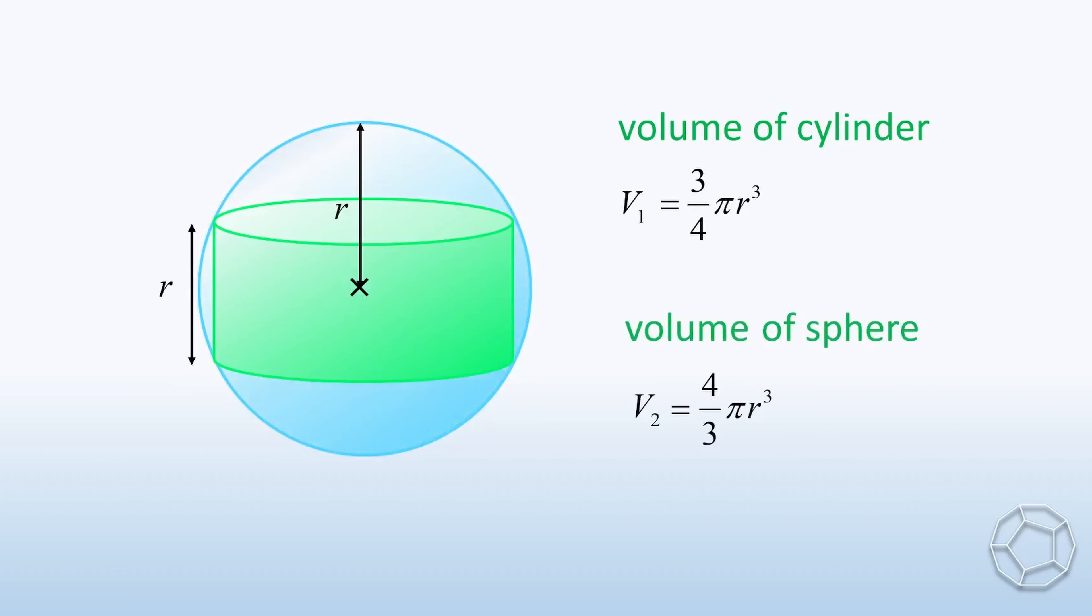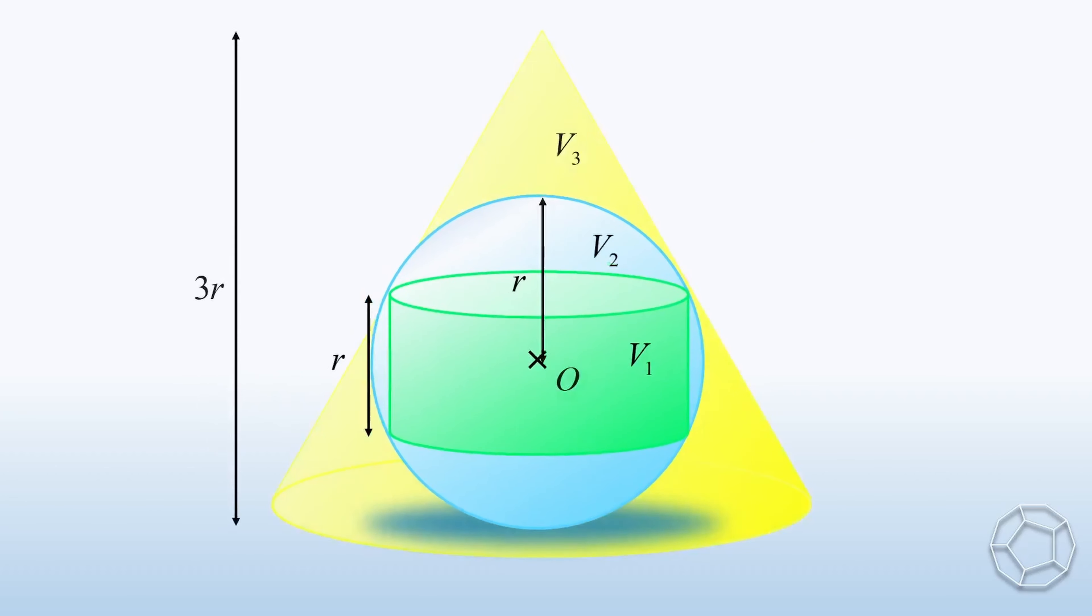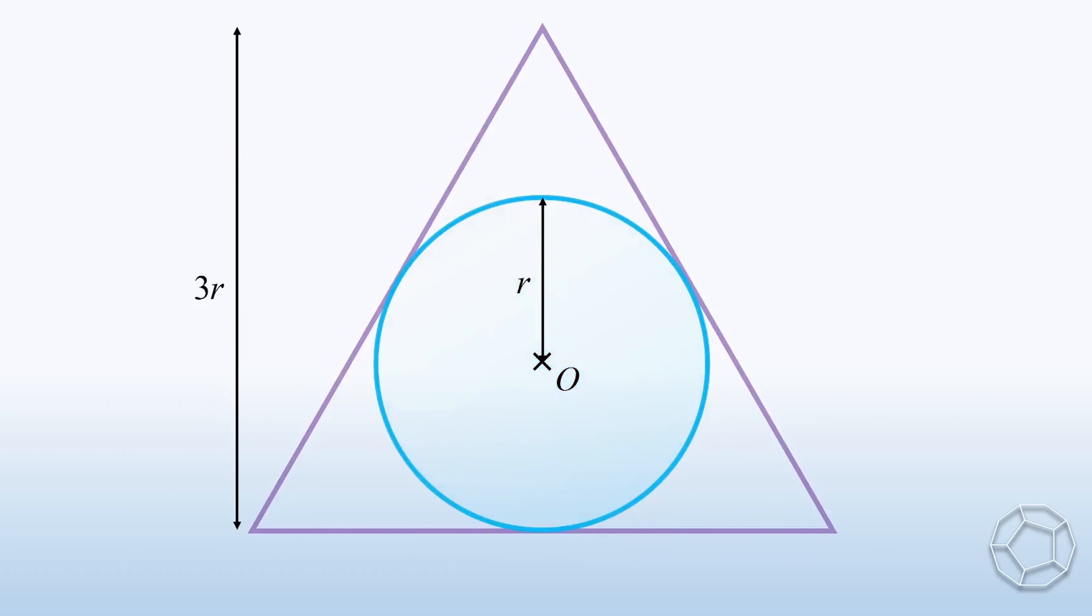Now we have V1 and V2. Let's work out the volume of cone V3. At this moment, we consider the cone and the sphere. Take the side view again. The cone is represented by the isosceles triangle FGH.